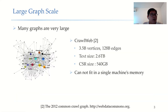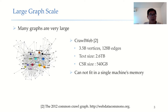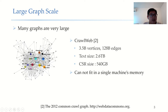However, with the development of the Internet, graph size continues to grow. Many graphs can be very large. For example, the CrowdWeb dataset contains 3.5 billion vertices and 128 billion edges. The initial text size is 2.6 TB. Even with CSR format, it needs 540 GB to store the whole graph.